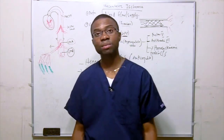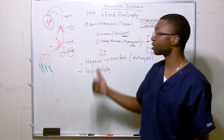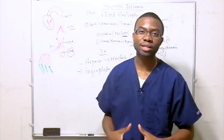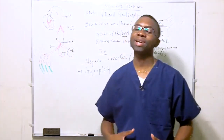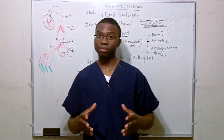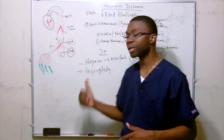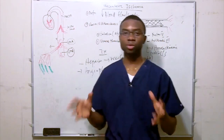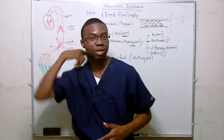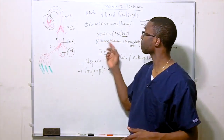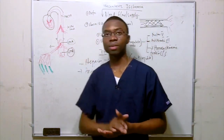To summarize: mesenteric ischemia can be caused by atherosclerosis, embolism, or venous thrombosis. Physical exam shows pain out of proportion, worsening after eating. Imaging with x-ray or CT may show air in the bowel wall. Labs show high lactate and LDH. Treat with IV fluids, antibiotics, and anticoagulation. Watch for a history of atrial fibrillation and hyperlipidemia.